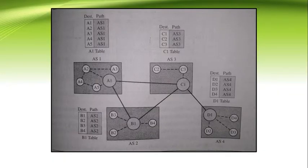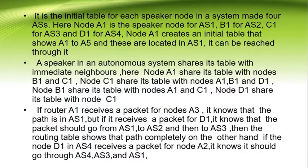This is the diagram of path vector routing. It shows the initial table for each speaker node in a system made up of autonomous systems (AS). Node A1 is the speaker node for AS1, B1 for AS2, C1 for AS3, and D1 for AS4. Node A1 creates an initial table showing nodes A1 to A5, which are located in AS1 and can be reached through it.